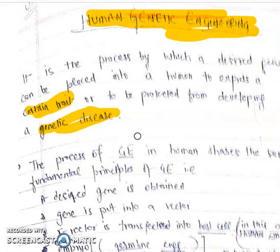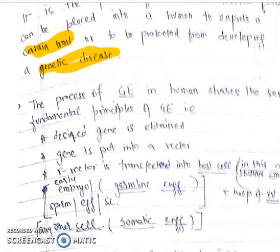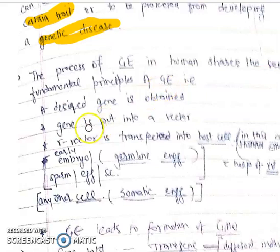The process of genetic engineering in human beings shares the same common steps as genetic engineering. First, the desired gene is obtained, then it is put into the vector. Before putting into the vector, this gene should have an upstream promoter and downstream terminator sequence, and if needed, an antibiotic resistance gene as well.